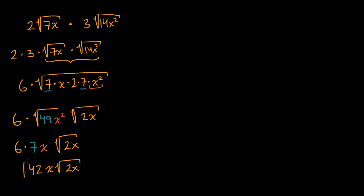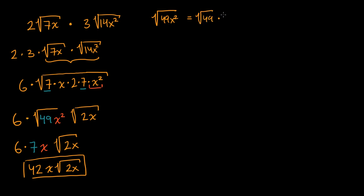The key thing to appreciate is I keep using this property: that a radical of products, or the square root of products, is the same thing as the product of the square roots. So even this step — if you wanted, you could have had an intermediary step. You could have said the square root of 49 x squared is the same thing as the square root of 49 times the square root of x squared, which gives us seven times x.